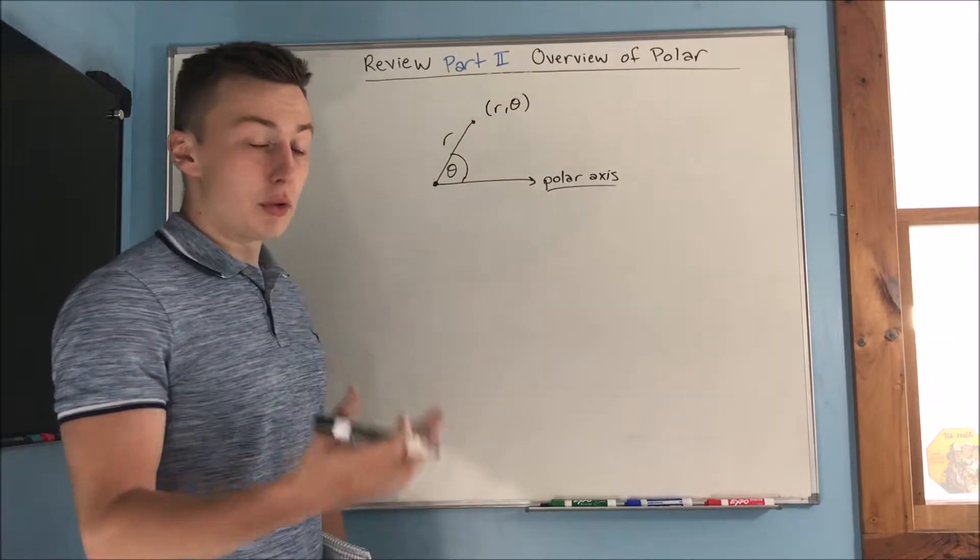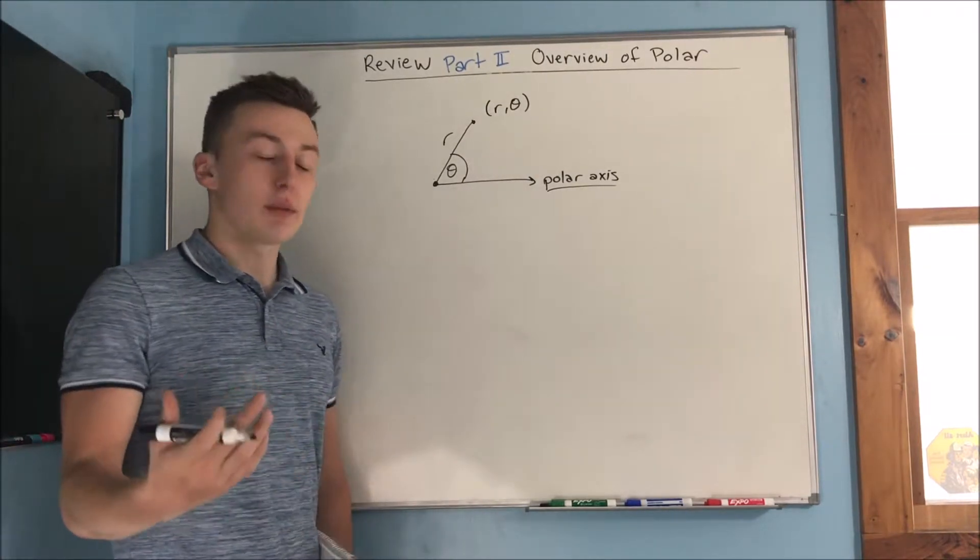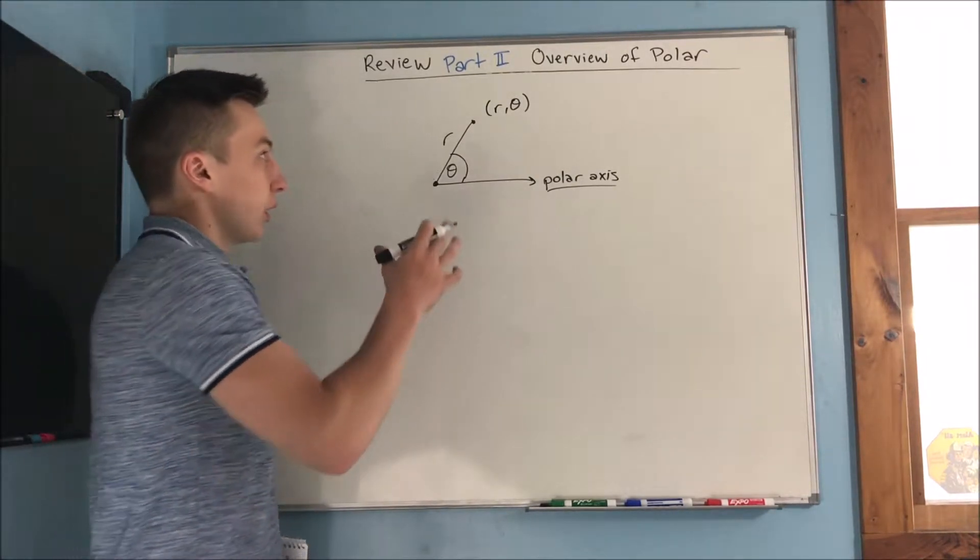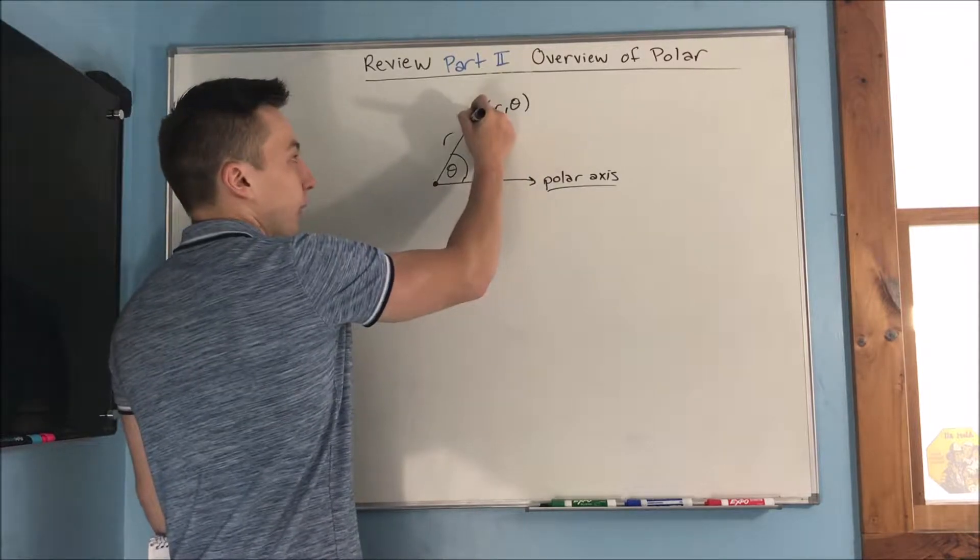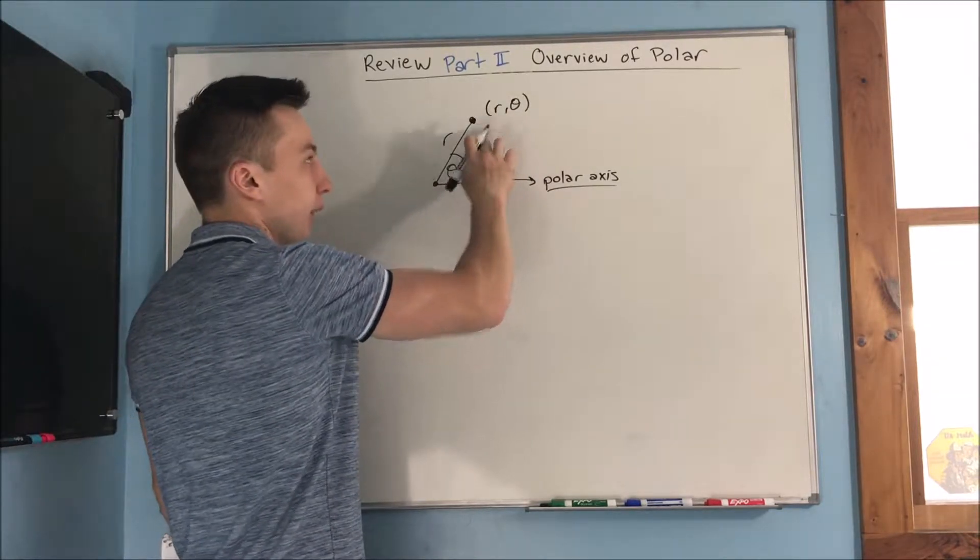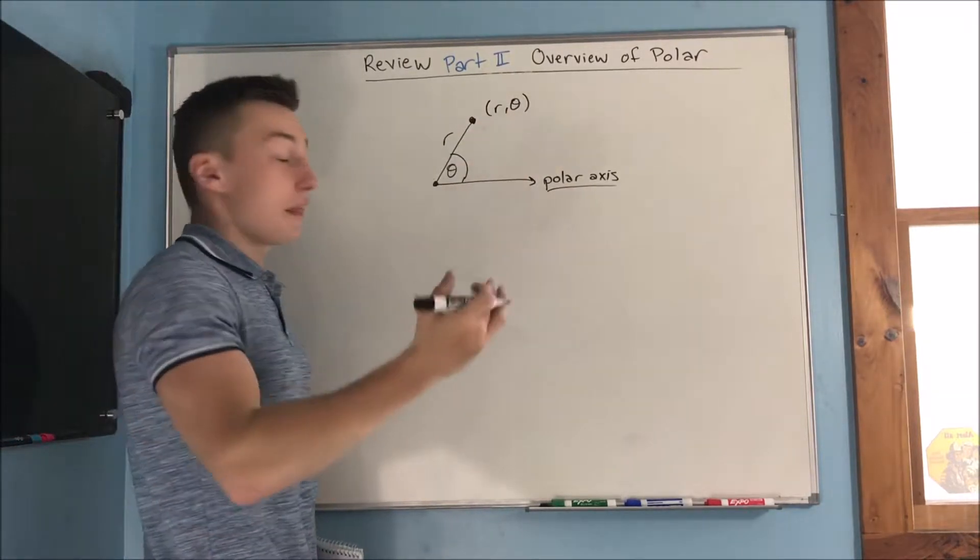So polar is another way to kind of grasp things. And what we have here is we have a point R comma theta. That's our new point, is R and theta.